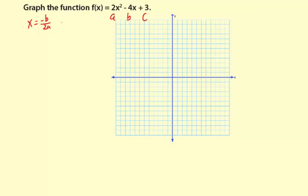The b value is negative 4, so x equals the negative of negative 4 divided by 2 times a, which is 2. That simplifies to negative times negative 4, which is just 4, divided by 2 times 2, which is also 4, equals 1. So the x value of the vertex is 1.